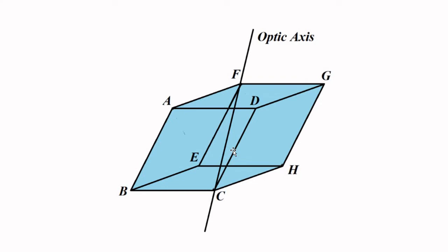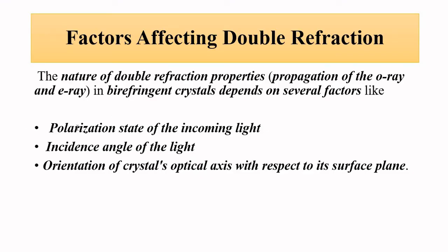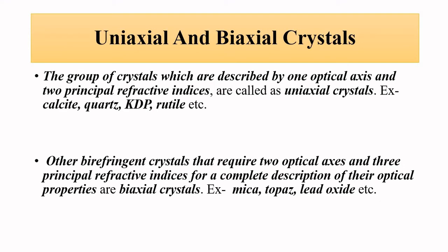Double refraction also depends on whether the crystal is uniaxial or biaxial — uniaxial means one optical axis, biaxial means two. The optical axis is defined as the line joining two opposite blunt corners of the crystal making equal angles with each of its three faces. So the double refraction phenomenon depends on these factors: polarization state of the incoming light, angle of incidence, and the type and direction of the optical axis.